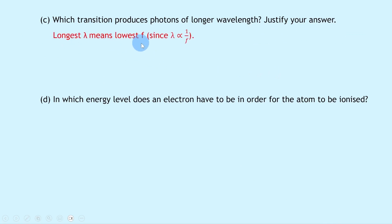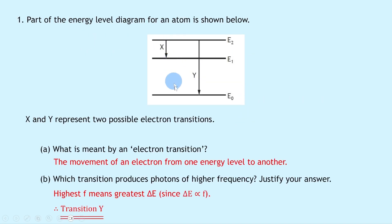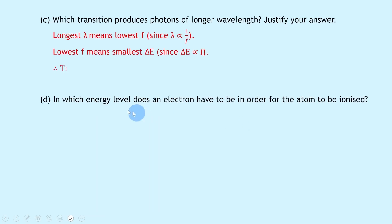Part c says: which transition produces photons of longer wavelength? Justify your answer. The longest wavelength means the lowest frequency, since from the wave equation v = fλ, wavelength λ and frequency f are inversely proportional. So the lowest frequency means the smallest change in energy, from ΔE = hf. Looking at the diagram, the transition with the smallest energy difference is X, so it's transition X.